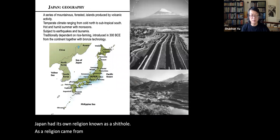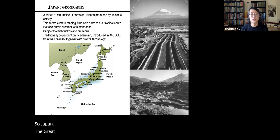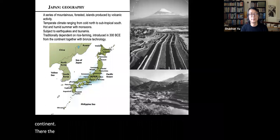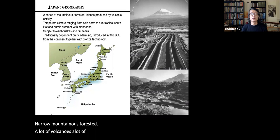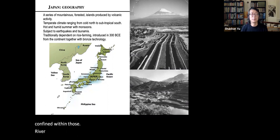Shinto as a religion came from the natural environment of the Japanese Isles. Like Great Britain, Japan is an island country on the eastern end of the Euro-Asian continent. The land was narrow, mountainous, forested, with a lot of volcanoes and earthquakes.